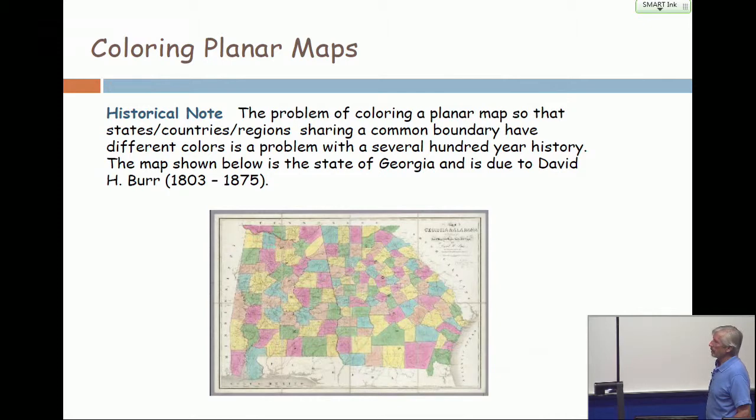It's a map of the state of Georgia, and it was produced by a map maker named David H. Burr, who lived from 1803 to 1875. I don't know exactly when Mr. Burr made this map, but do you notice anything special about this map? Okay.